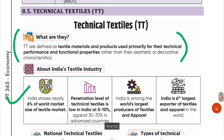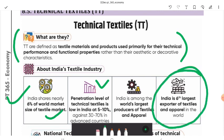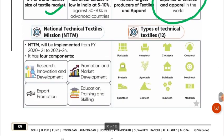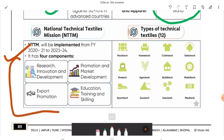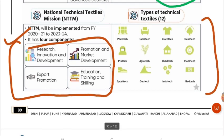Next topic is Technical Textile. Technical textile is a textile material used for technical performance and functional properties rather than decorative or aesthetic characteristics. India holds a 6% share in the world textile market, but the penetration level of technical textiles is low at 5-10%, compared to 30-70% in advanced countries. India is the largest producer of jute and the largest exporter in several textile categories. The National Technical Textile Mission was implemented from 2021 to 2026, with 4 components: research and development, promotion, export promotion, and education, training and skilling.